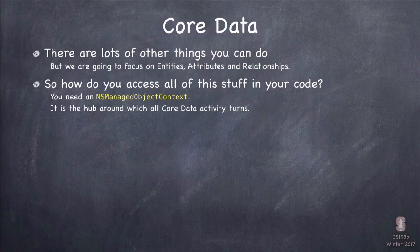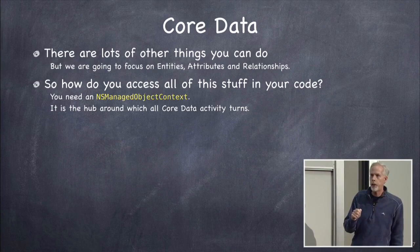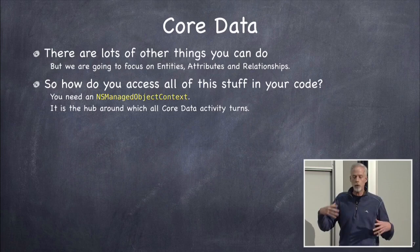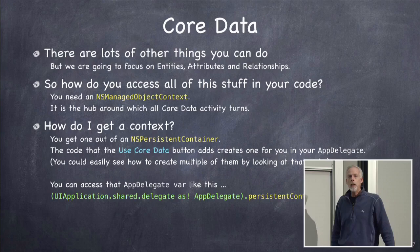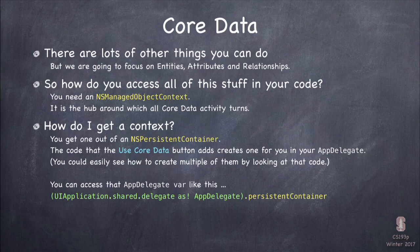Now that you've defined entities, attributes, and relationships, to do anything with them you need NSManagedObjectContext. Those objects in the database are NSManagedObjects, and you need a context — which represents a database — to create, fetch, or delete them. To get an NSManagedObjectContext, you need a persistent container. You get one by clicking Use CoreData — it appears in your AppDelegate as a lazy var called persistentContainer — and from that you get the context.